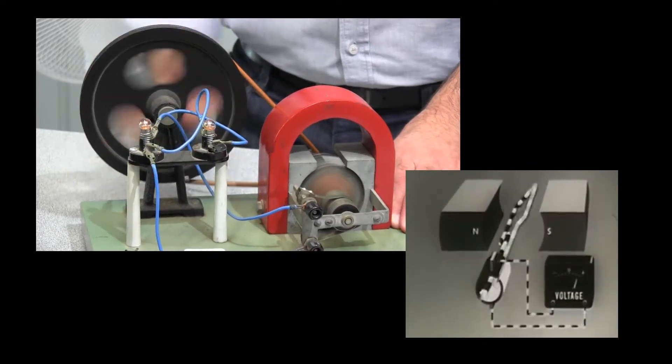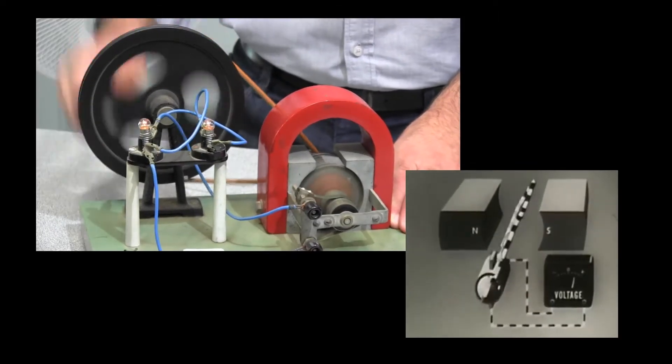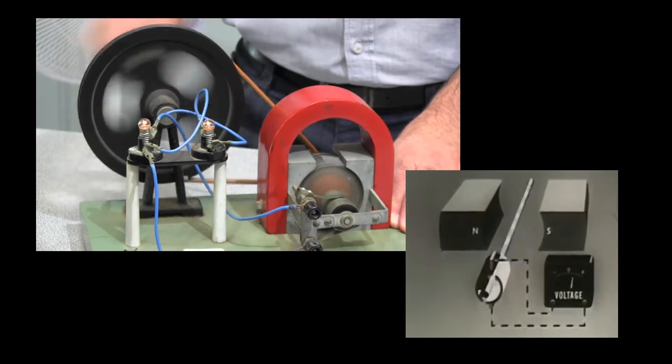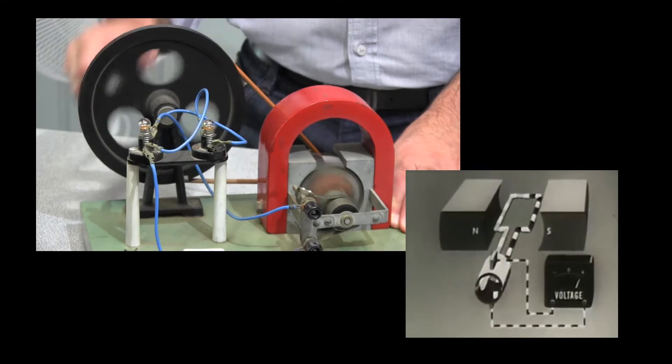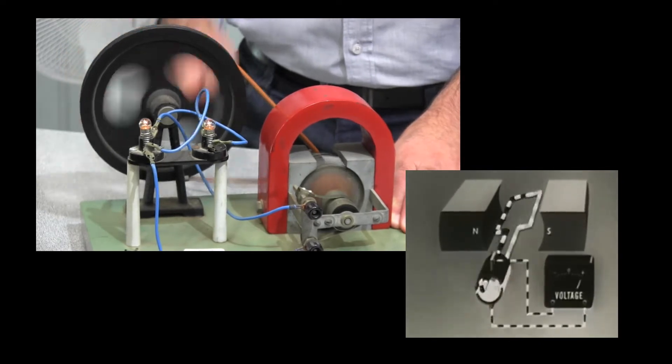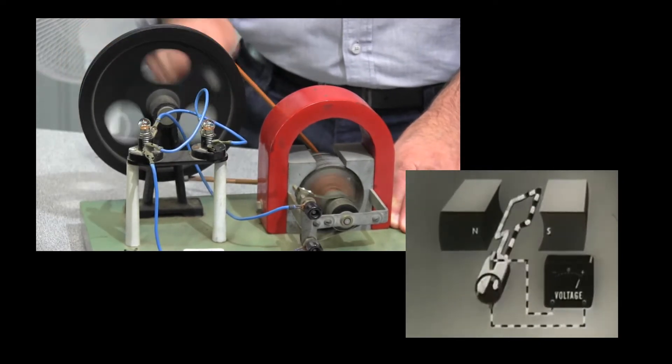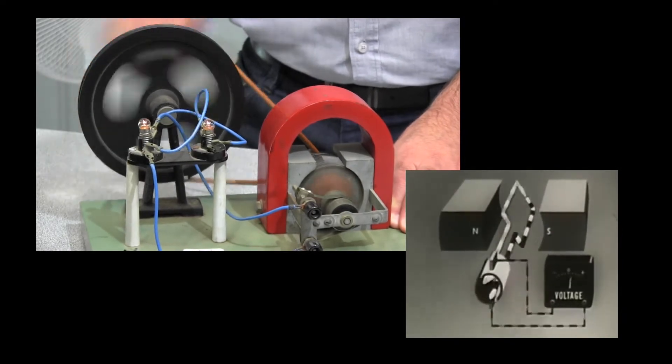It's the same with generators. The electrons in the coil of wire that is spinning between the two magnets get pushed out of the coil, through the light globes, and then back into the coil again. A generator is literally an electron pump, and the electrons just move around and around in a continuous unbroken circuit.